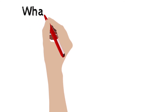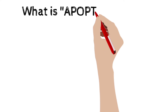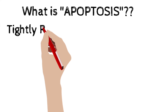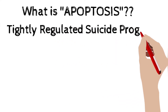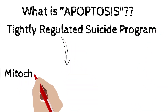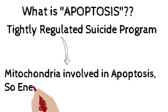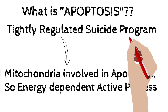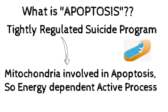Hello everyone, myself Dr. Parth Goswami, and today I am going to teach you a very important topic from cell injury — that is apoptosis. Apoptosis is a form of irreversible cell injury; it is a form of cell death in which you have tightly regulated suicidal programmed cell death. In this particular process, mitochondria is involved, so you can easily understand that it is an energy-dependent active process.